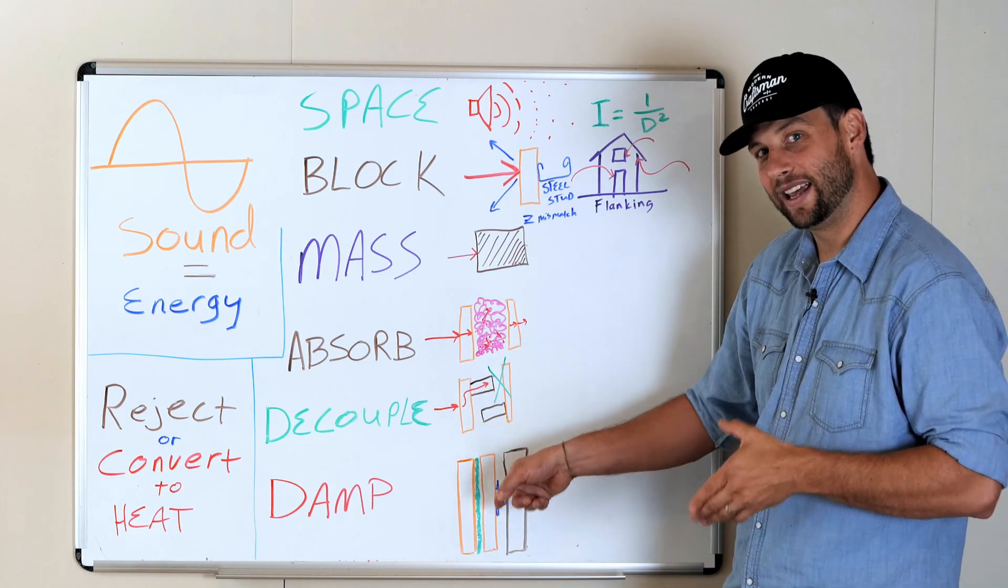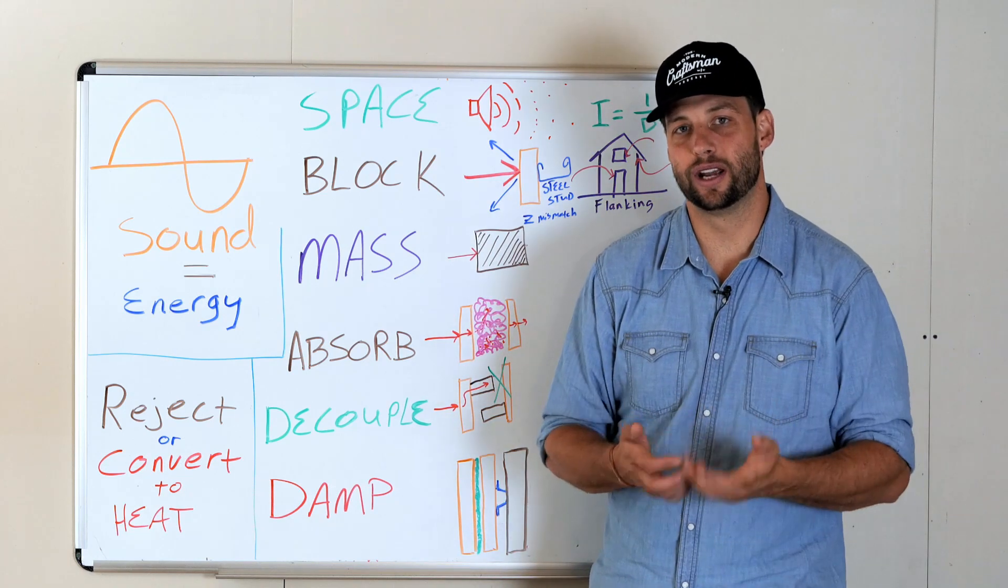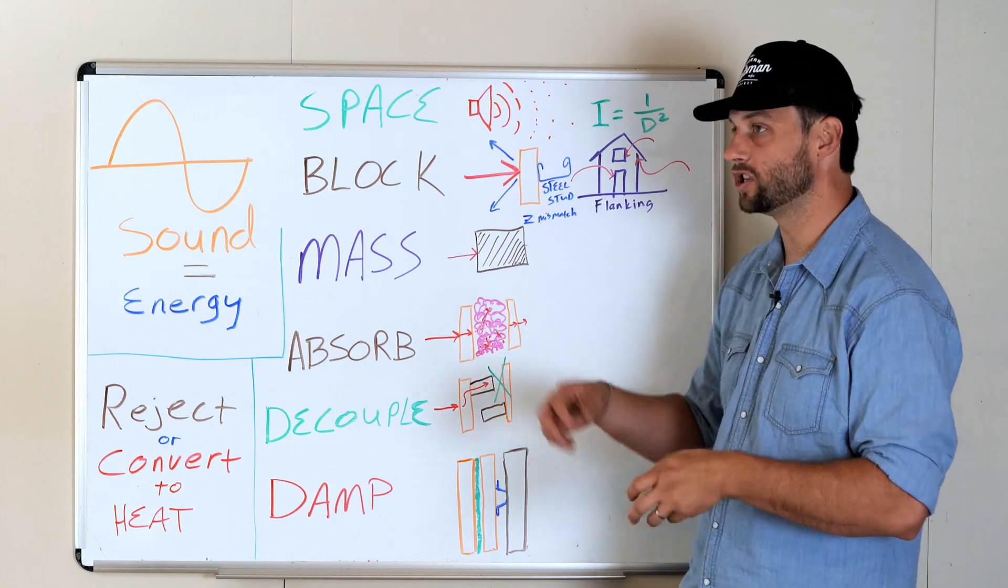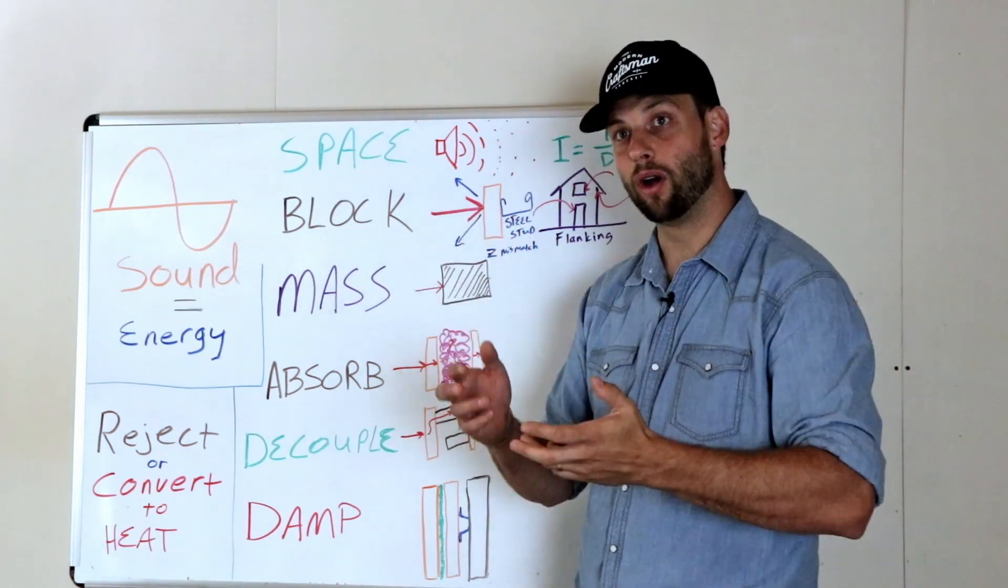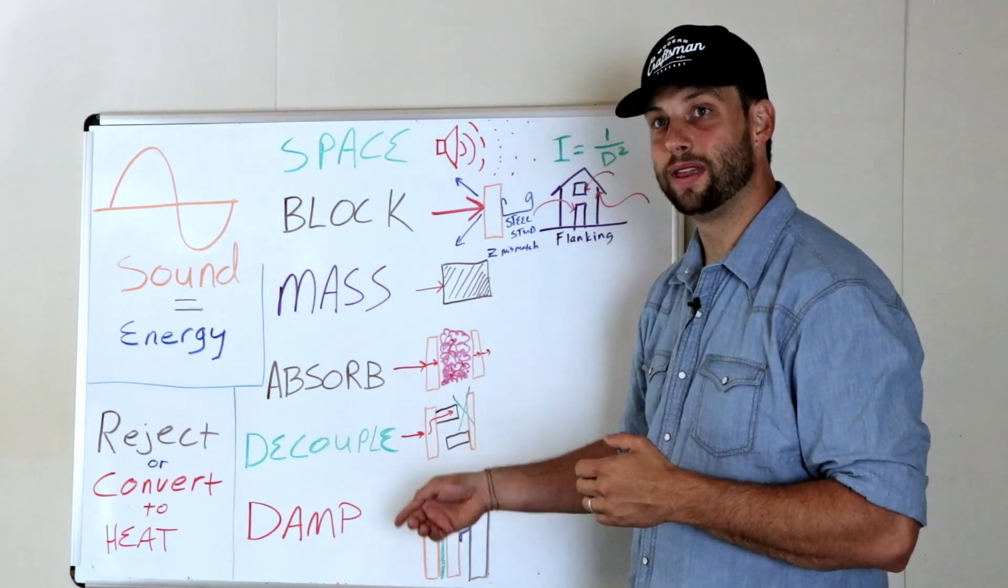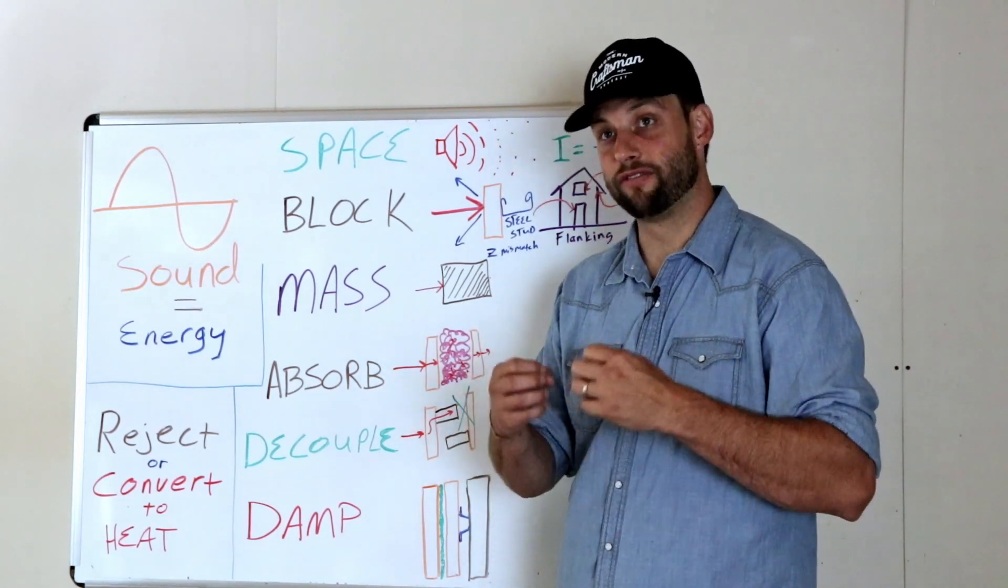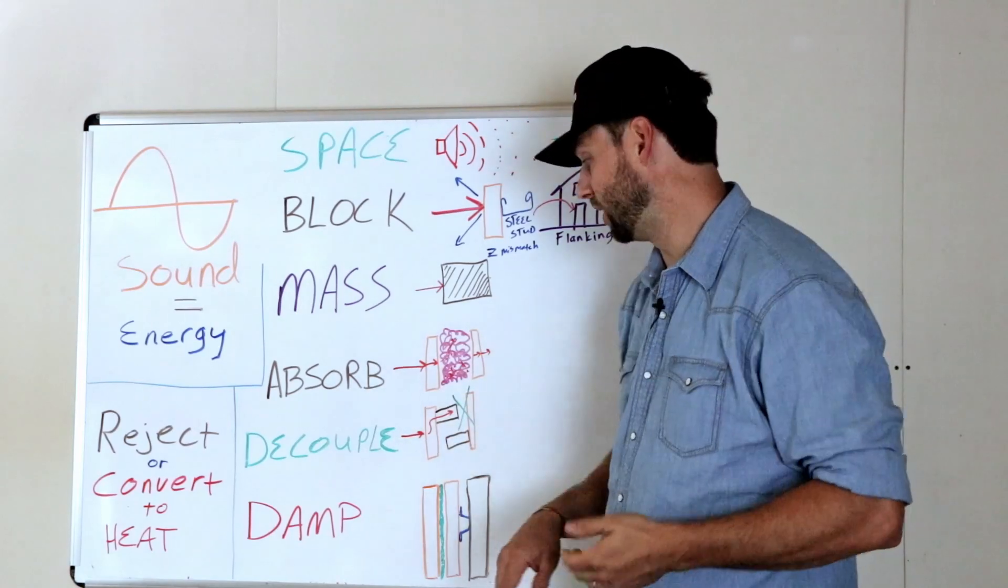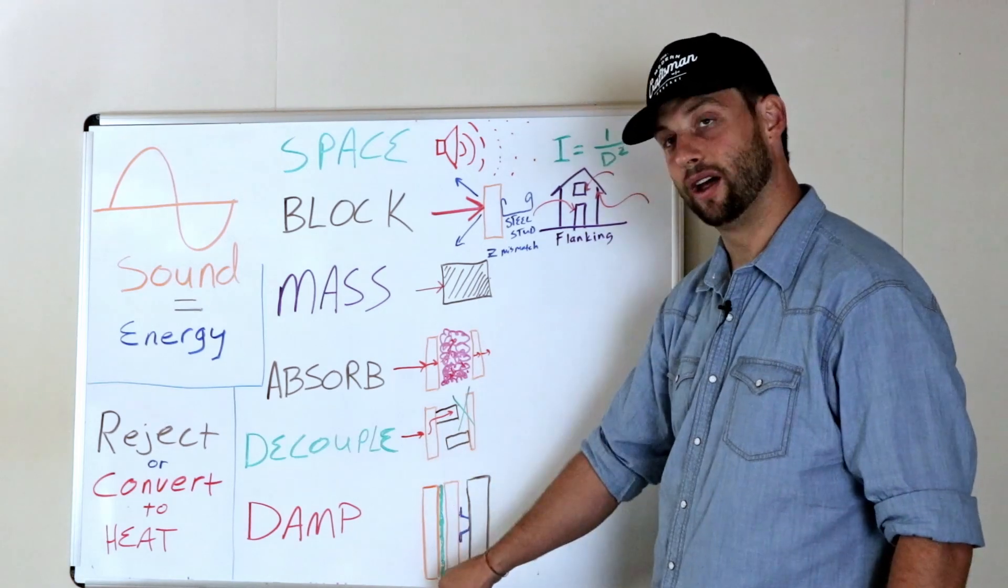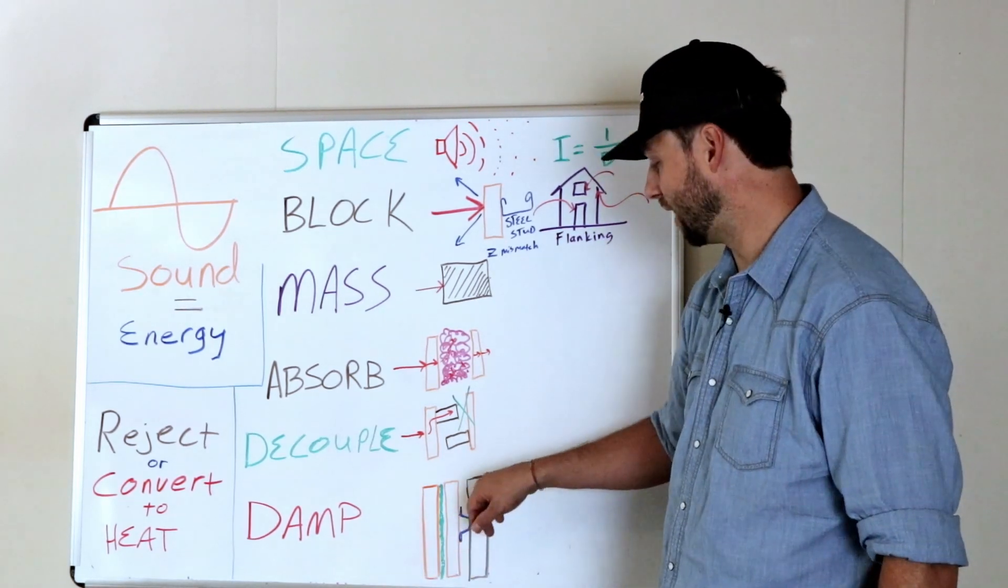So this is, damping is sort of like absorbing. You're still burning the energy up as heat, but you're doing it in a slightly different way. Instead of just burning it up from friction amongst the air molecules like you do with absorbing, you are burning up the energy through mechanical motion and friction between solid material. So in this example that I've shown here, I've got two pieces of gypsum. I've got a layer of green glue between them. I've got a resilient channel and I've got the stud.